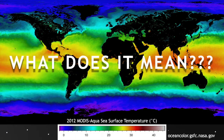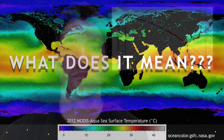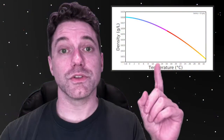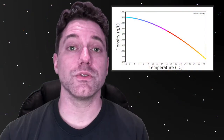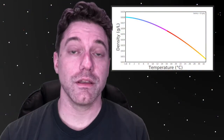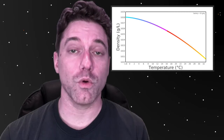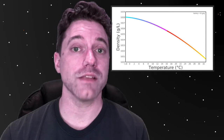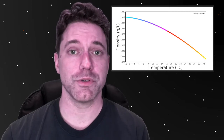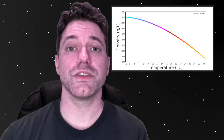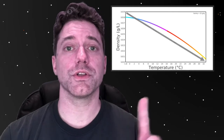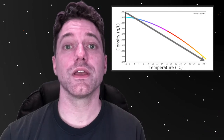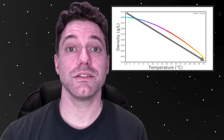Now what does that mean in regards to density and water mass formation? Here is a graph that shows density in grams per liter, or mass per volume, as a function of temperature. Generally, we can see that as temperature increases, density decreases.